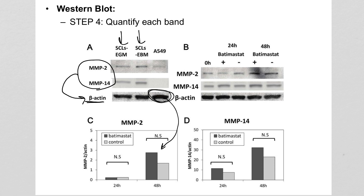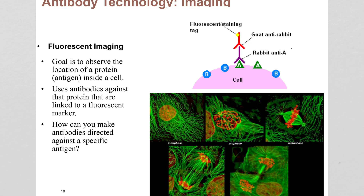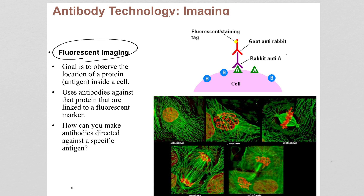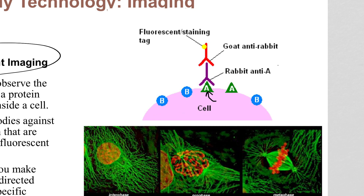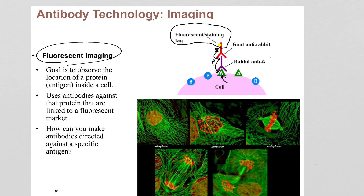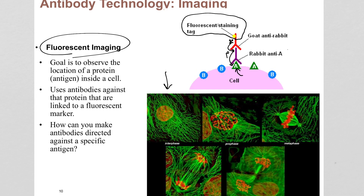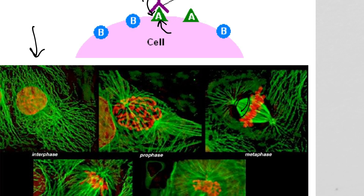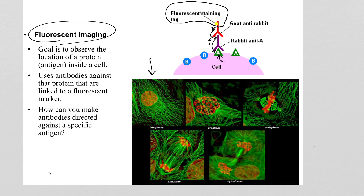Westerns are great for quantifying protein, but they require you to rupture your cells and break them into pieces to add the lysate to the gel. In contrast, fluorescent antibody imaging — immunohistochemistry — isn't as good for quantification but shows you the positioning of proteins inside a cell. The concept is the same as ELISA and Western: a primary antibody binds the antigen, a secondary antibody binds the primary, and a fluorescent tag attached to the secondary emits light under a fluorescent microscope. In these example pictures, two different antibodies are used: green staining of microtubules — you can see them forming the mitotic spindle — and red staining of histones found in chromosomes, showing the red chromosomes lining up on the metaphase plate. You can use this to study the location of any protein in a cell, as long as you have an antibody that binds to it conjugated to a fluorescent marker.